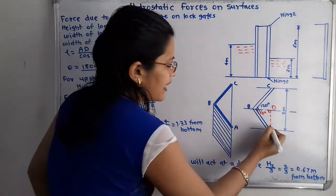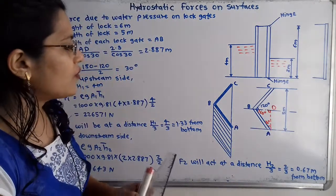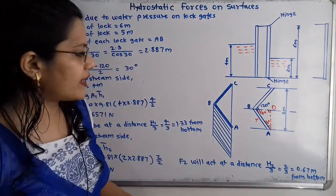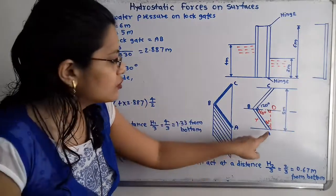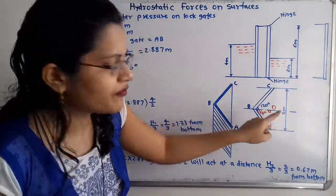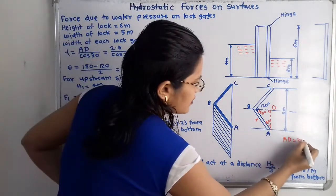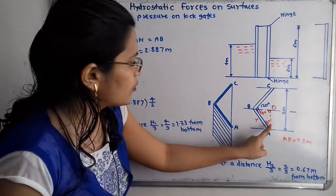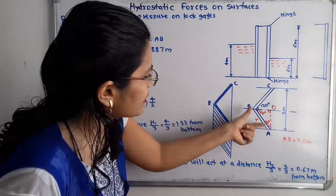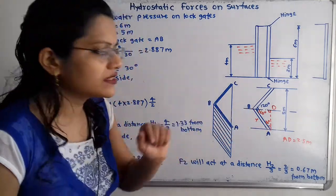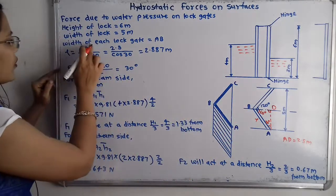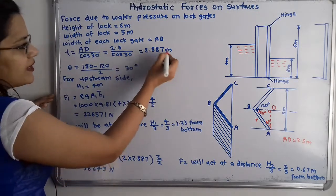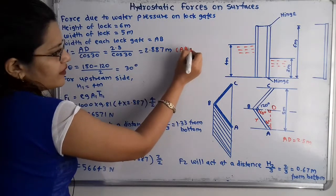This line is perpendicular, so the angle is 90 degrees, and the remaining angle is 30 degrees. To find the length of AB, the total width is 5 meters, so AD = 5/2 = 2.5 meters. Using cos(30°) = AD/AB, we get L = AB = AD / cos(30°) = 2.5 / cos(30°) = 2.887 meters. So this is the length of AB which is equal to BC.